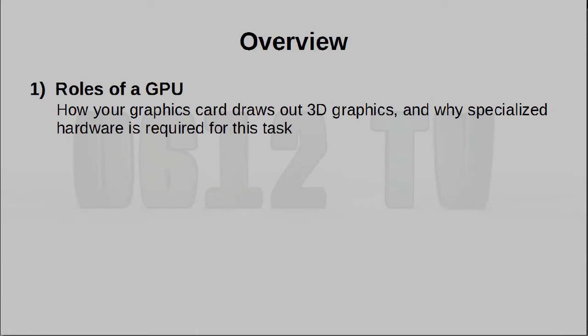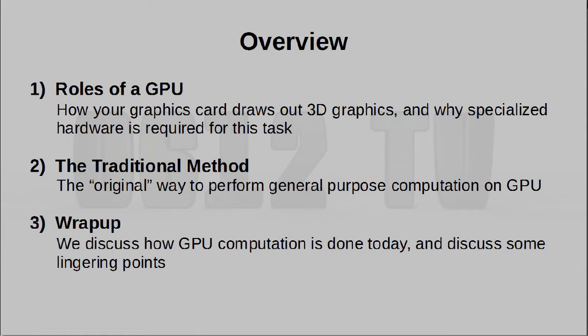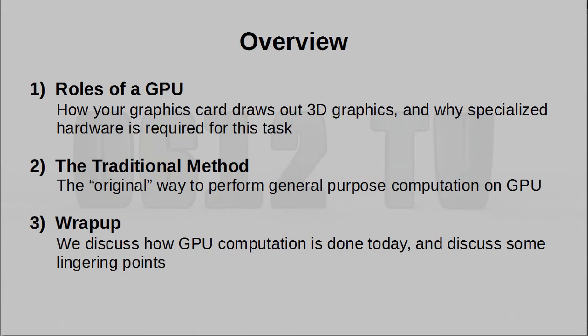Here's how this video is going to be organized. In order to understand how we can actually use a GPU — that is the graphics processing unit of your computer — to speed up general-purpose computation, we first need to understand how it does its actual job, and that is to render out graphics. Once we understand that, we can move on to look at some basic ways of harnessing its power for general-purpose computation, then wrap up with modern improvements and why it's not used all the time.